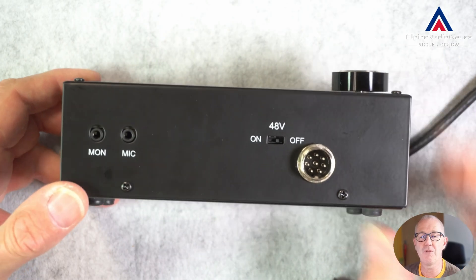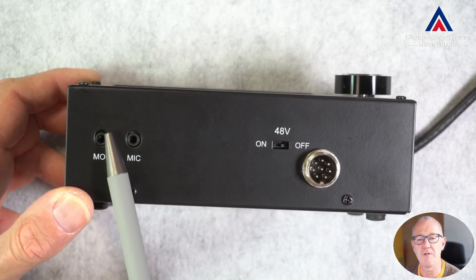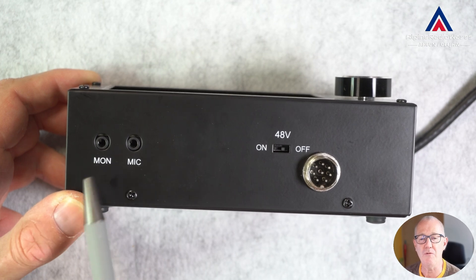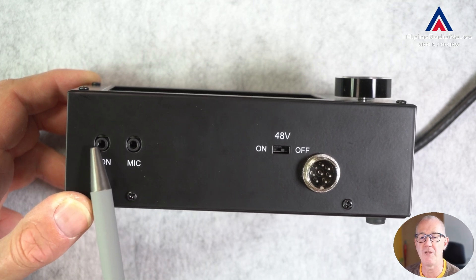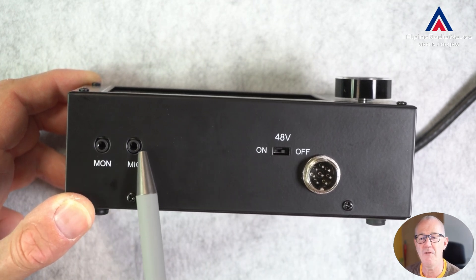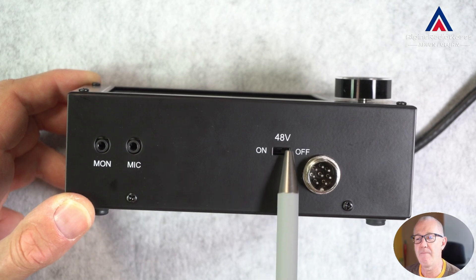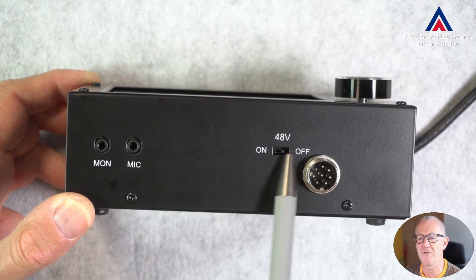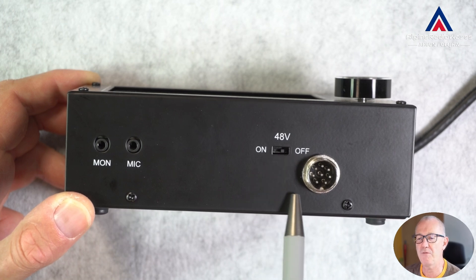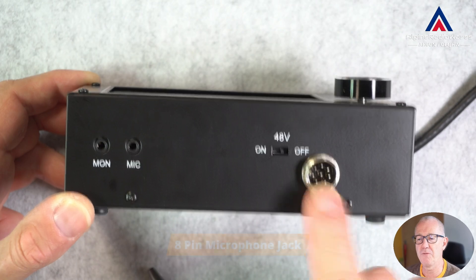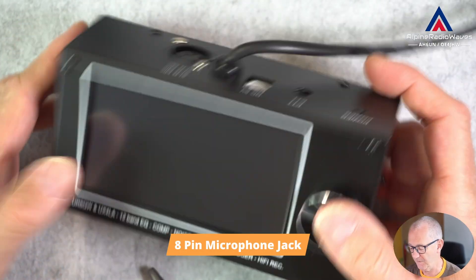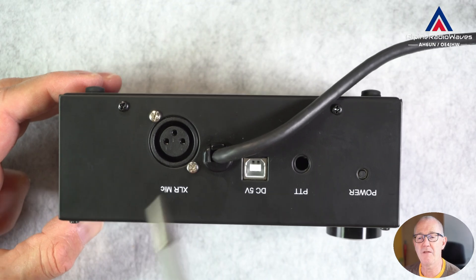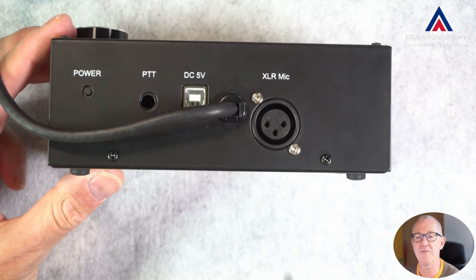There is a dial which is also a push button. On the front you have a plug for a microphone and a monitor. For example, headphones where you can monitor your audio. There's another microphone input. Here you can turn on the 48-volt phantom power for some microphones. Here is the microphone input.